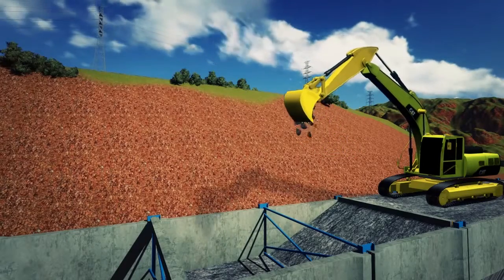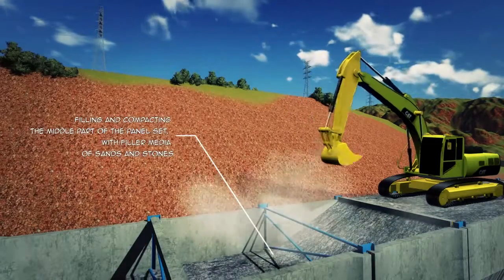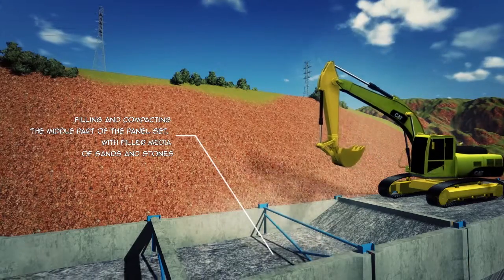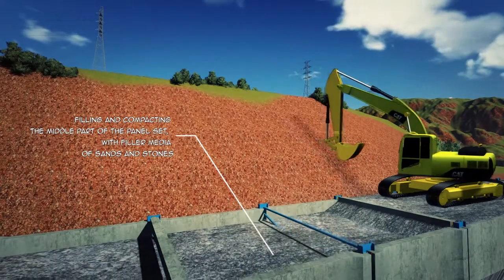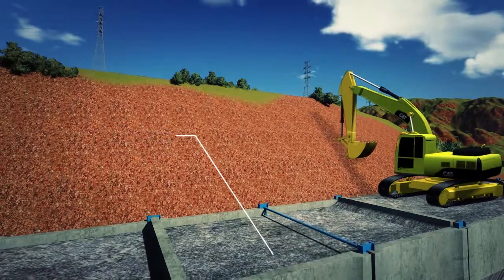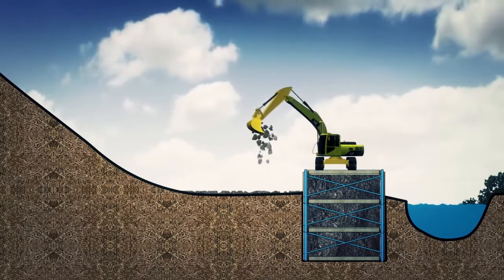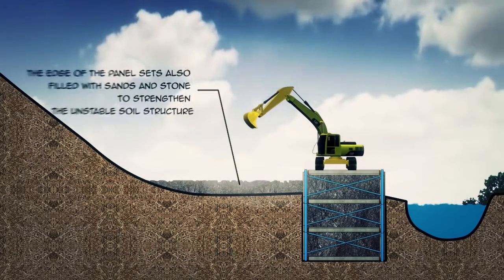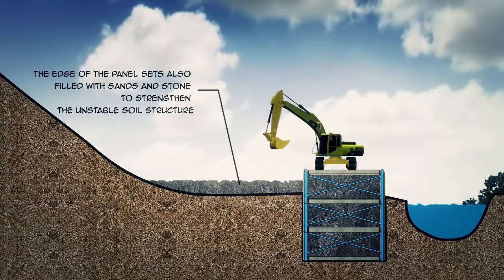Next, the middle part of the panel set is filled and compacted with filler media of sands and stones. The edges of the panel sets are also filled with sands and stone to strengthen the unstable soil structure.